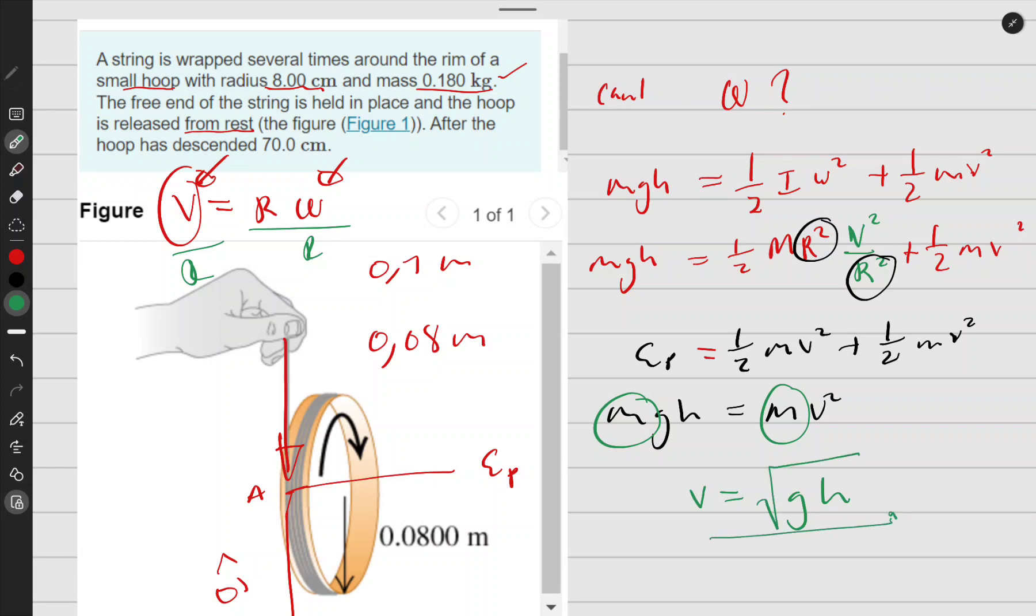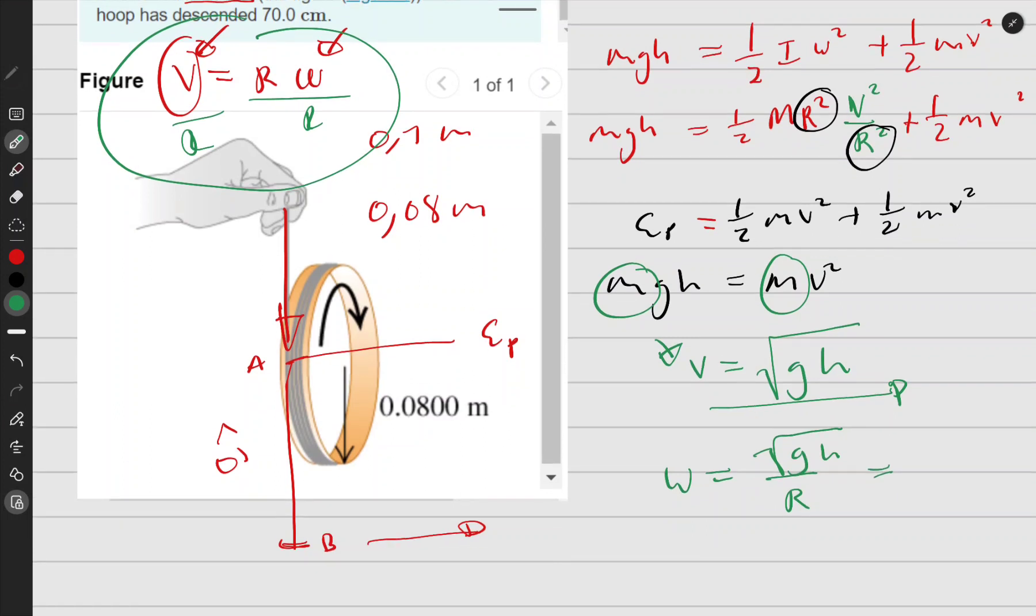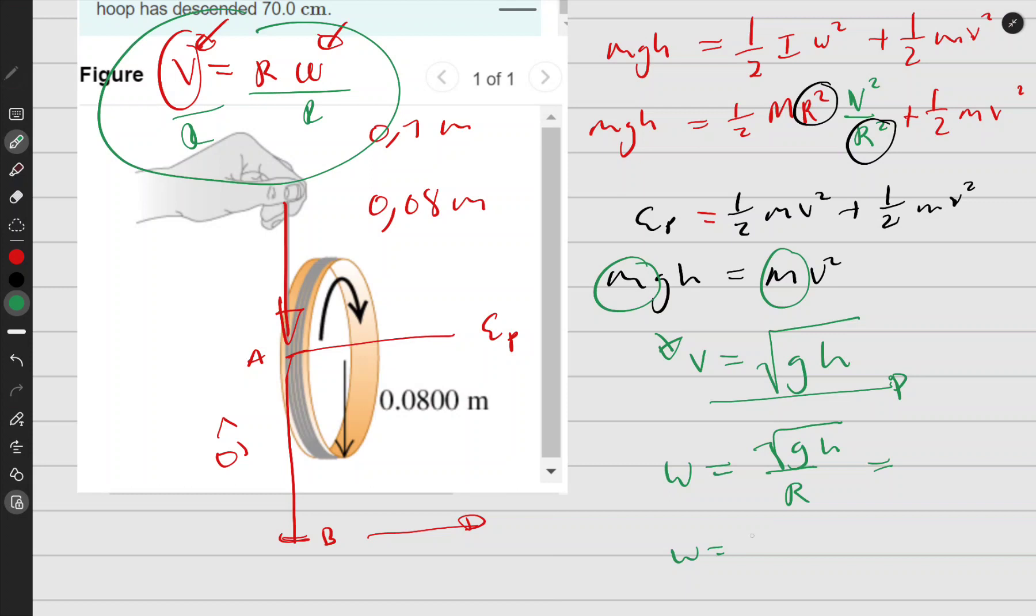I have this translational velocity but want rotational, so omega equals V over R. V is square root of gh, so omega equals square root of gh divided by R, and then you get your answer.